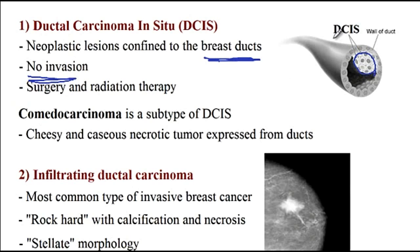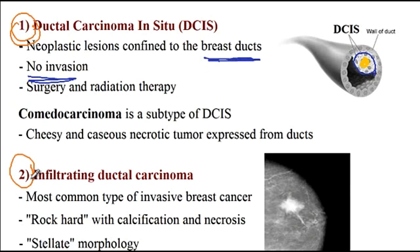An important feature of both ductal carcinoma in situ and invasive ductal carcinoma is that there are necrotic cells at the center of the cancer cells. These necrotic cells cause microcalcifications that become evident on mammography. Both DCIS and invasive ductal carcinoma present with microcalcifications.